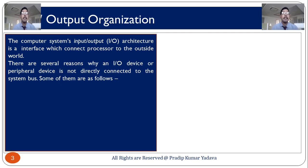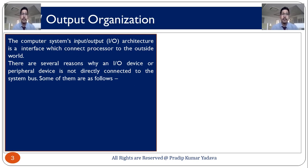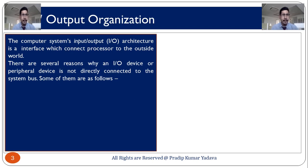So why do we require input-output organization? The computer system input-output architecture is an interface which is used generally to connect the microprocessor to the outside world, meaning peripheral devices which we are going to connect and communicate through the microprocessor. There are several reasons why input-output devices or peripheral devices are not directly connected to the system bus, and we use input-output technique so that data communication can be processed smoothly between the peripheral device and the microprocessor.